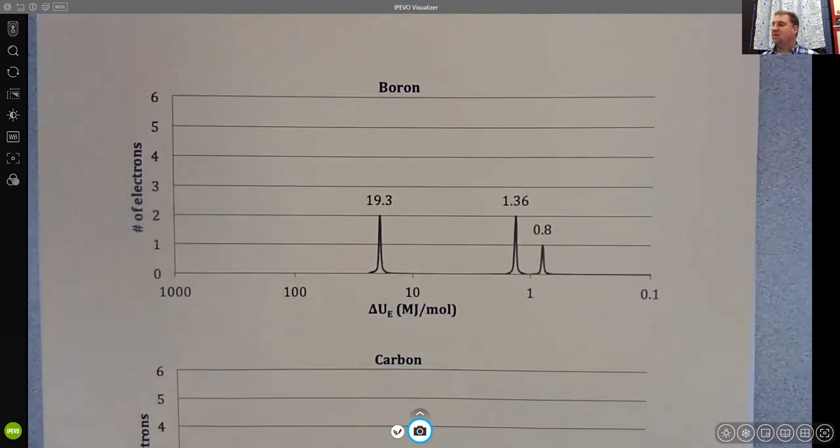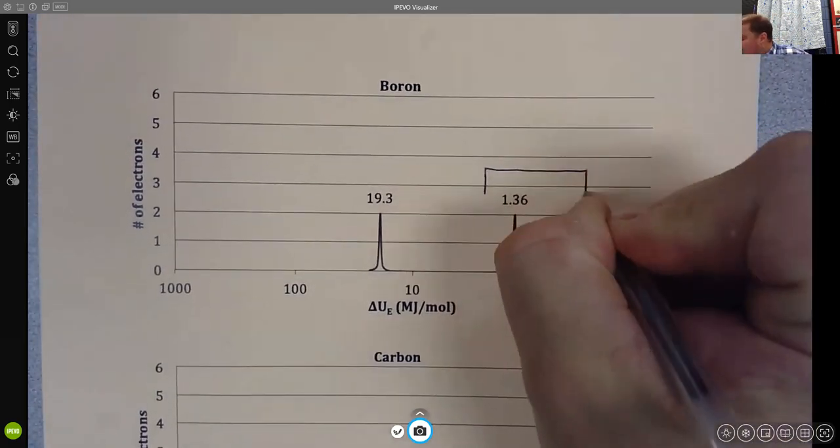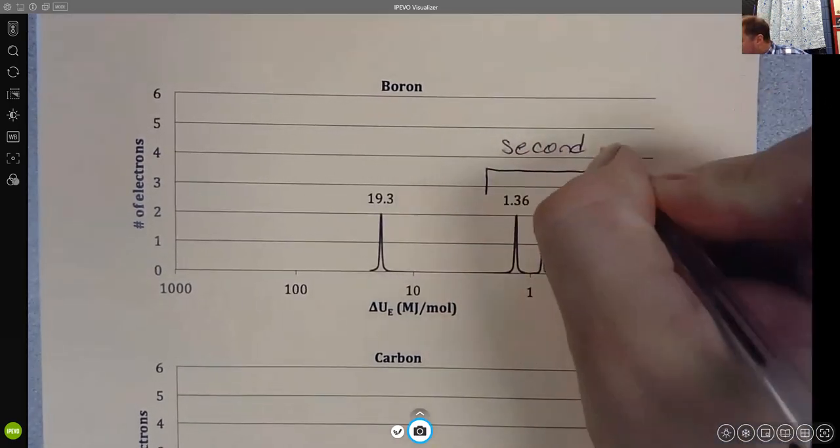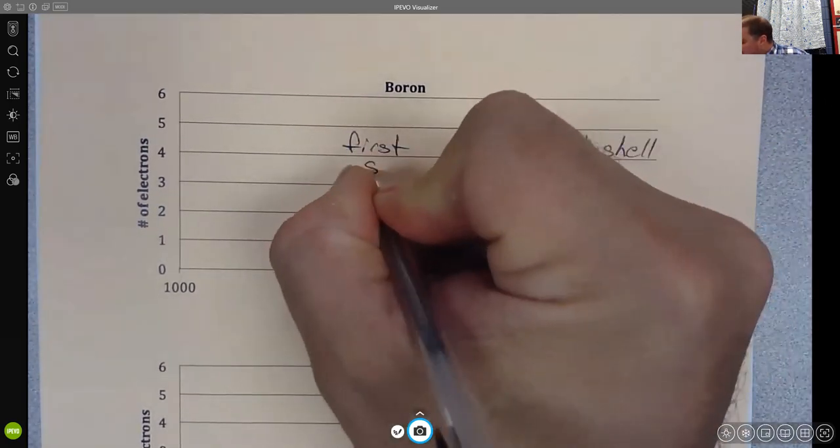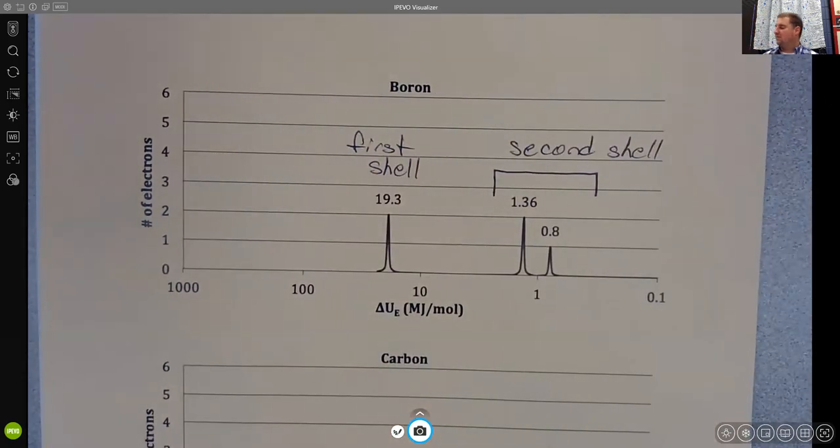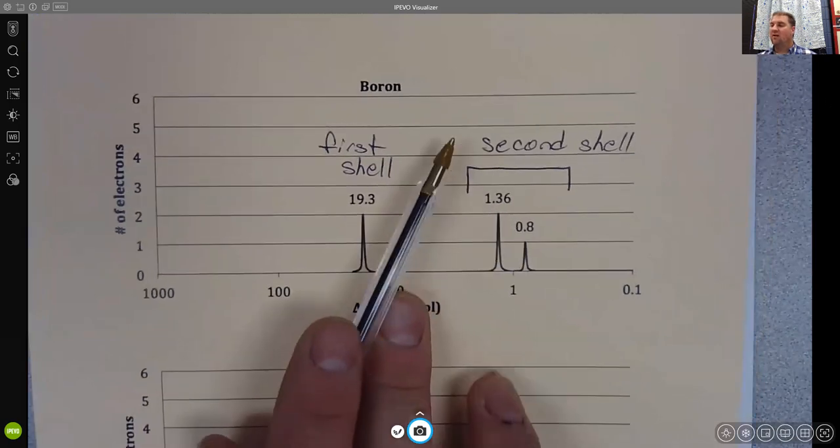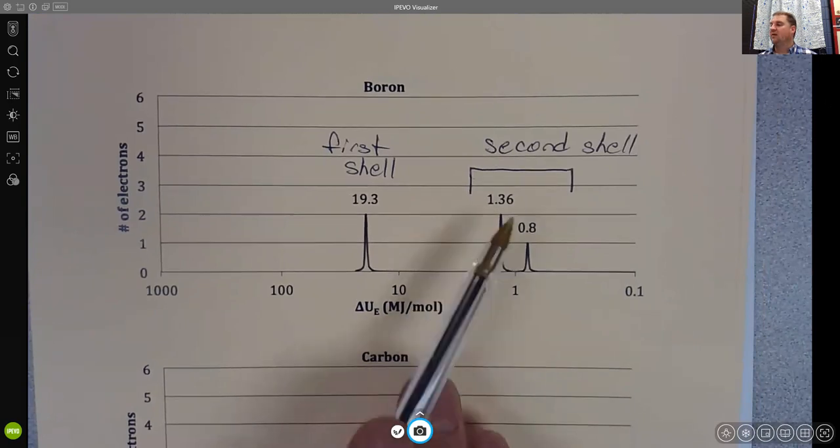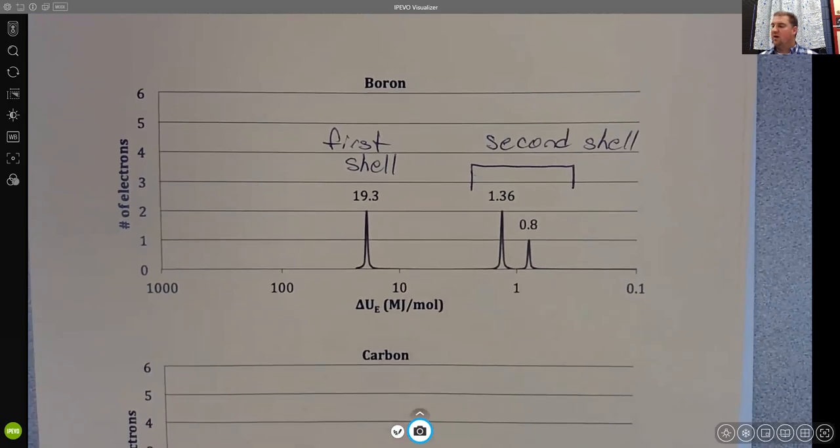But when we go from beryllium to boron, we see that the second peak does not increase at all. Instead we see a second peak associated with it. Now both of these peaks are associated with the second shell, whereas this first peak is still associated with the first shell. This energy goes down, and this energy also goes down. Before boron, this first peak was less than one. Now it's greater than one, and we see another peak here that's one. What do you think that's going to look like if we go to carbon?